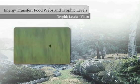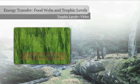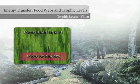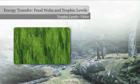The first link in any food chain are the food producers. They are photosynthetic organisms like plants, which are able to produce food in the form of energy-rich glucose from non-living matter.